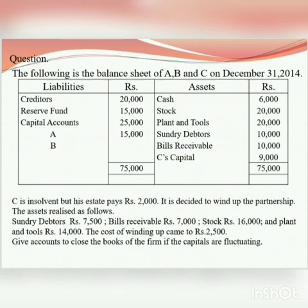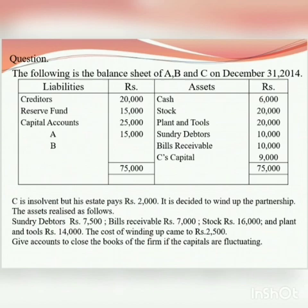Insolvency-related question: C is insolvent. C's private estate pays Rs. 2,000. If you cannot prepare the accounts, you will not be able to close the books. C is insolvent — so we must find C's deficiency.